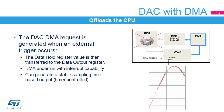The DAC can also create DMA requests from the trigger signal. Once a trigger is detected, the data hold register value is transferred to the data output register. Then a DMA request is generated to obtain the new data for the data hold register. As the update of the output data register is initiated directly by the trigger signal, the DAC output signal will not have jitter, so it can create a stable sampling time signal output, making it easy to filter out the sampling frequency.